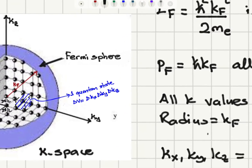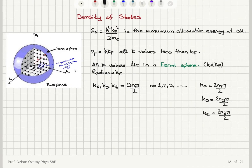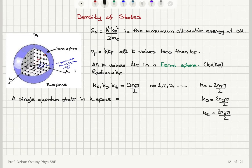We can state that one quantum state is going to have a volume δkx · δky · δkz, which is equal to (2π/L)³, because one quantum state is inside this cube. So a single quantum state in k-space occupies a volume ΔV = δkx · δky · δkz = (2π/L)³.